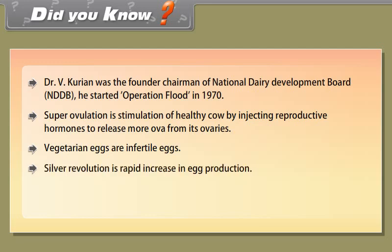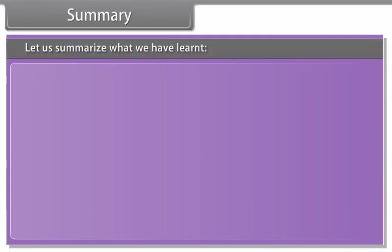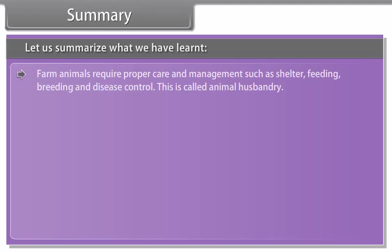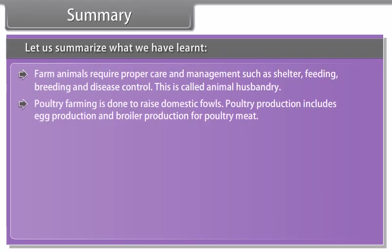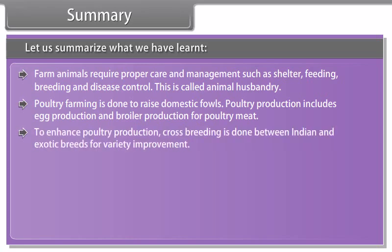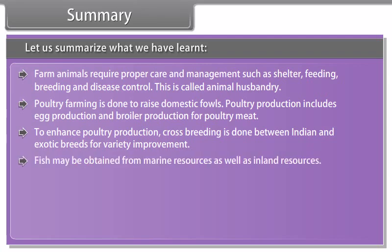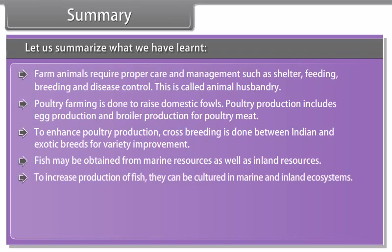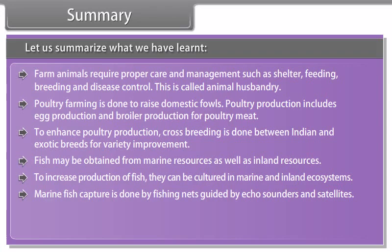Farm animals require proper care and management such as shelter, feeding, breeding and disease control — this is called animal husbandry. Poultry farming is done to raise domestic fowls; poultry production includes egg production and broiler production for poultry meat. Cross-breeding between Indian and exotic breeds is done for variety improvement. Fish may be obtained from marine as well as inland resources, and can be cultured in marine and inland ecosystems. Marine fish capture is done by fishing nets guided by echo sounders and satellites. Composite fish culture system is commonly used for fish farming. Beekeeping is done to get honey and wax.